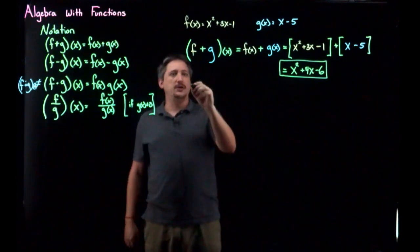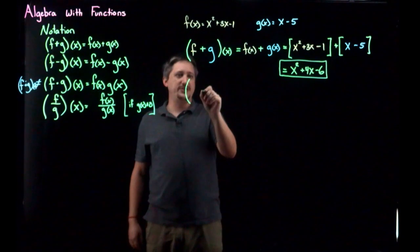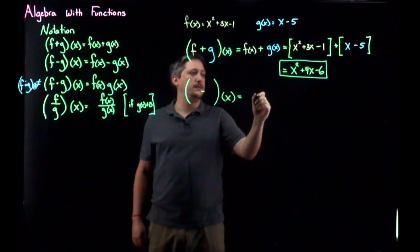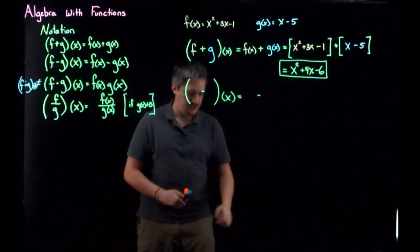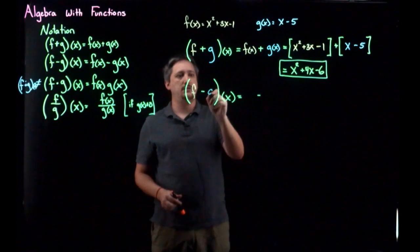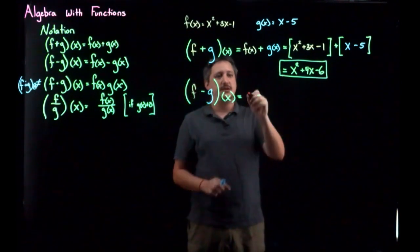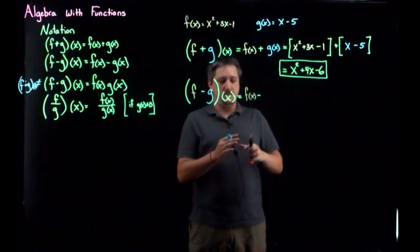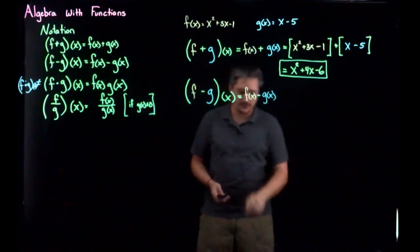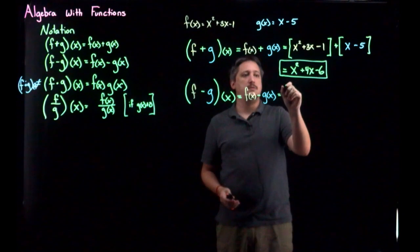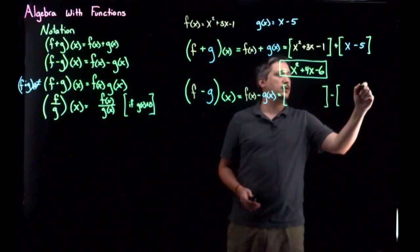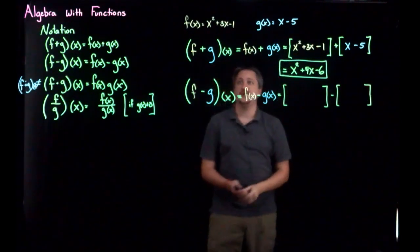The next one shows a potential pitfall. For the difference F minus G applied to X, we do F of X minus G of X. Same setup — always using parentheses. F of X gives X squared plus 3x minus 1, and we subtract G of X which is X minus 5.